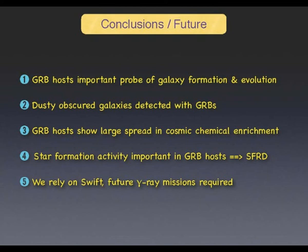My conclusions: GRB host galaxies are an important probe of galaxy formation and evolution. There is a fraction of them that are dusty, finally detected if you are fast enough. The chemical evolution is spread over orders of magnitude — no simple chemical evolution is easily detected. Star formation rate density can be probed using gamma-ray bursts, and we rely on SWIFT, which has been funded for another two years until 2014.